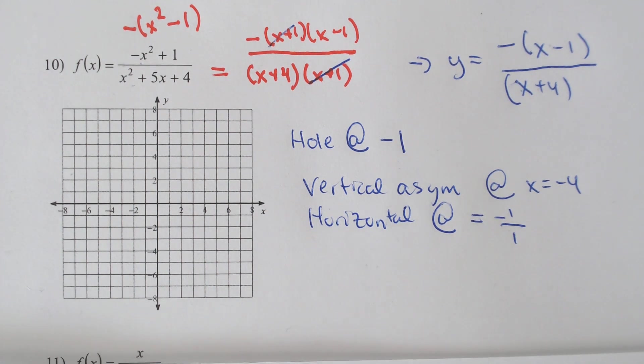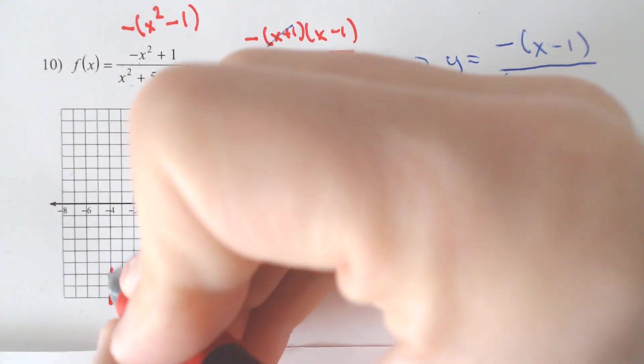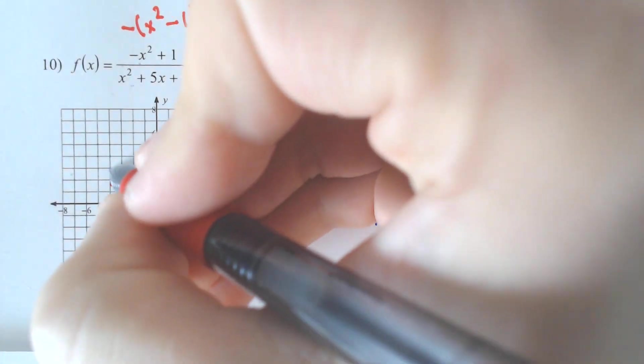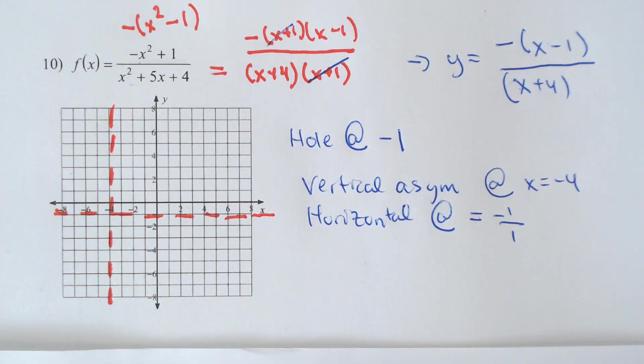And those are the key features that we need to graph. So if I graph my vertical asymptote at negative 4, and if I graph my horizontal asymptote at negative 1, I would have the rough part of my graph that I would need.